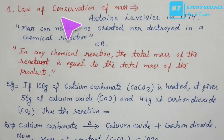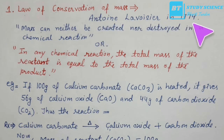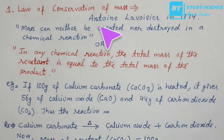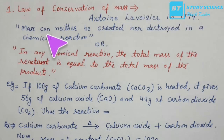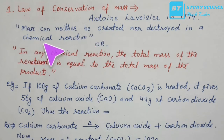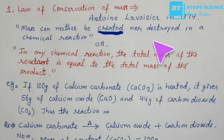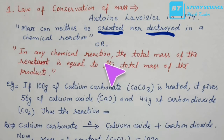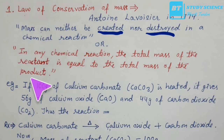The first law is the law of conservation of mass. Mass can neither be created nor destroyed in a chemical reaction. In any chemical reaction, the total mass of the reactants is equal to the total mass of the products.